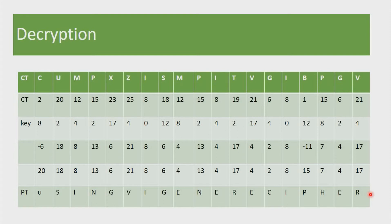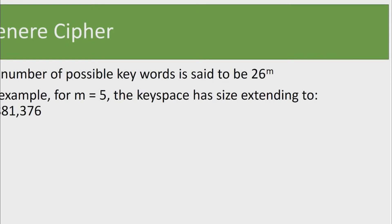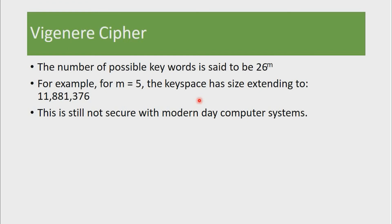A few side notes on the Vigenère cipher: the number of possible keywords is 26 to the power of M, where M is the size of the key. So if your key has 5 elements, the key space has size 11,881,376. In our case the word 'ice cream' has 8 letters, meaning our key space is 26 to the power of 8. If somebody doesn't know the size of your key, the key space is even larger. However, this system is still not very secure with modern day computers, because they can try out all possible keys in a matter of seconds.